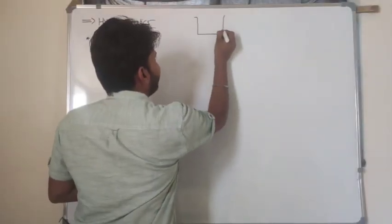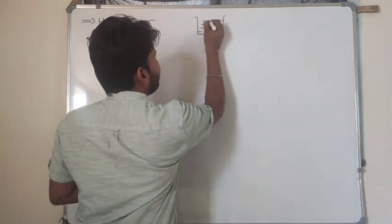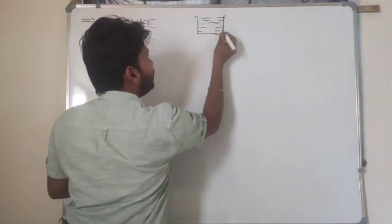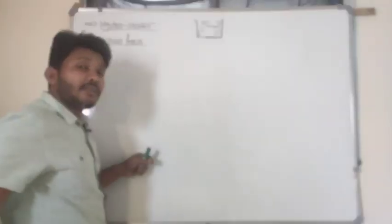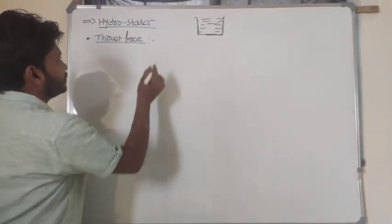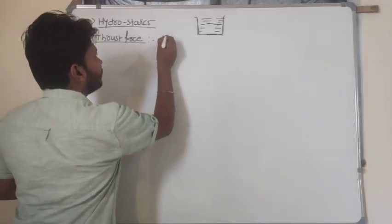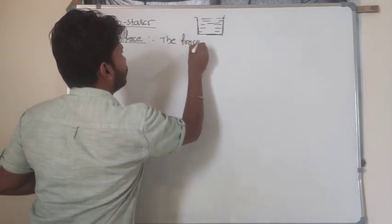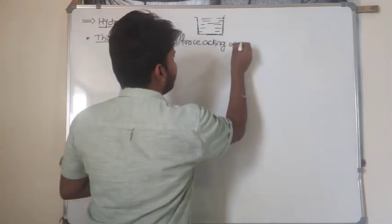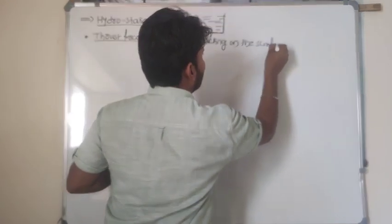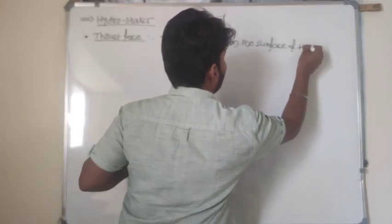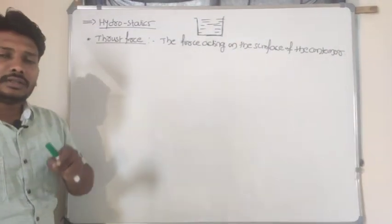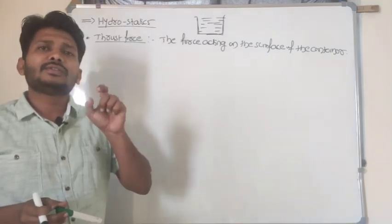For example, if I take one container and pour liquid into it, this liquid starts exerting force on the surface of the container. This kind of force we call thrust or thrust force. So the force acting on the surface of the container is called thrust force.